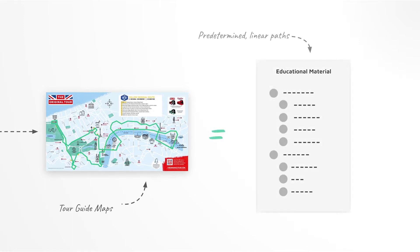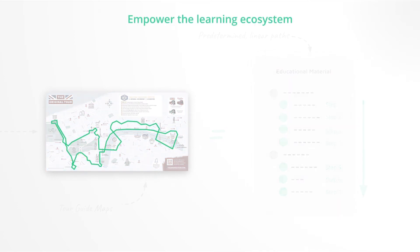Imagine a world without GPS navigation — a world where the only way to get around was with a bunch of static bus tour maps that quickly become dated. This is similar to the foundation education is built on today: designed to follow linear paths that reflect subject matter expertise but cannot take into account the learner's changing needs, circumstances, or goals.